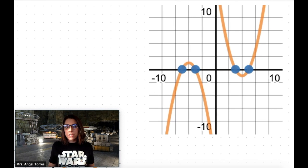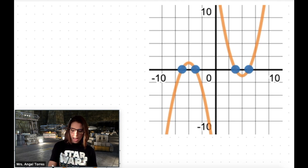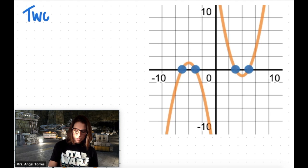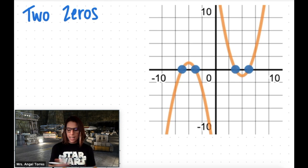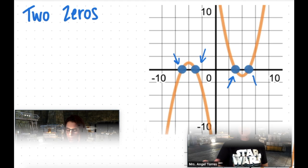Now before we can actually start solving some quadratic functions and finding the zeros, let's do a quick review on the types of zeros that you can have. So it's most common when you're graphing a quadratic that your function is going to have two zeros, meaning that the parabola is going to cross the x-axis in two locations. The parabola on the left has two zeros, and the parabola on the right has two zeros.